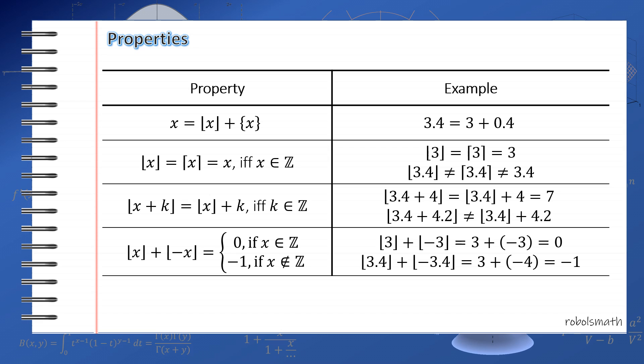And then if x is an integer, then your ceiling and your floor are the same, and it's equal to x. But if it's not an integer, this will never happen. Because the floor of 3.4 is 3, and the ceiling of 3.4 is 4. Clearly that's not equal. And clearly that's not equal to 3.4.